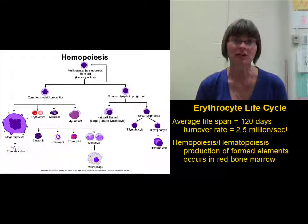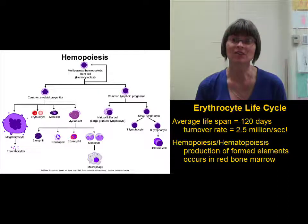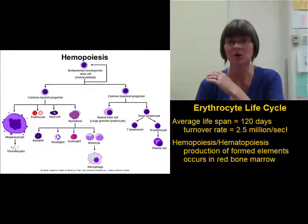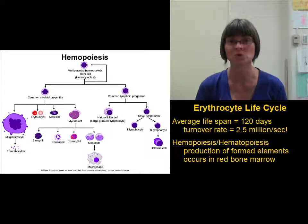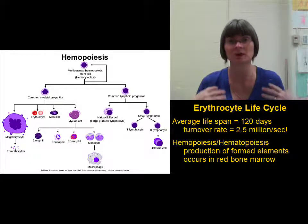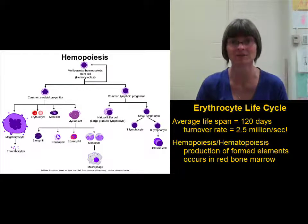In children, nearly all the marrow cavities are filled with red bone marrow that's making blood. In adults, a lot of the marrow cavities in the appendicular bones have been converted into yellow bone marrow. As you stay closer to the middle of the body, the axial bones is where we tend to find more of the red hematopoietic bone marrow in adults.